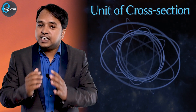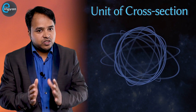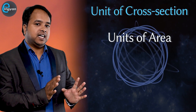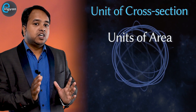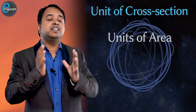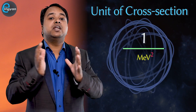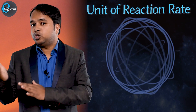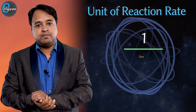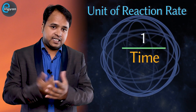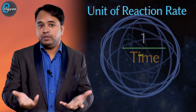Now what will be the unit of cross-section in natural units? As you know, the cross-section has units of area, so in natural units the cross-section is measured in 1 upon MeV squared. The reaction rate has units of 1 upon time, and hence the natural unit of reaction rate is MeV.